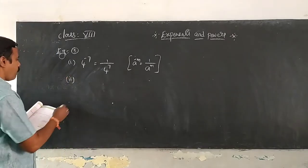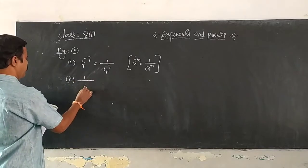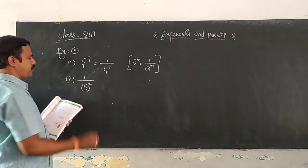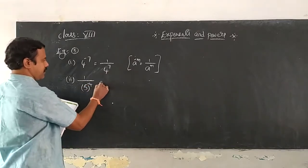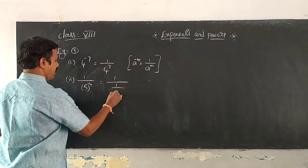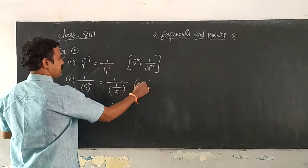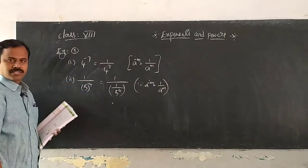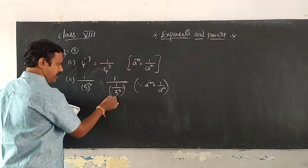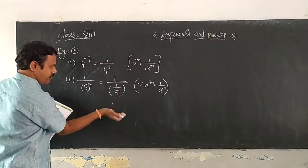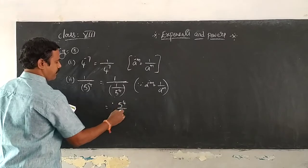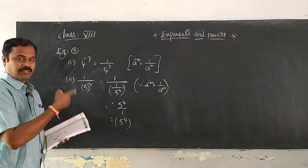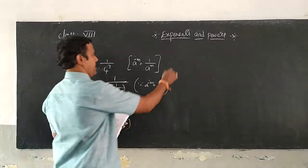Coming to the second question: 1 by 5 to the power of minus 4. Using the same formula, a power minus m equals 1 by a power m, we get 1 by (1 by 5 power 4). Since there is a fraction in the denominator, it gets reversed. So it becomes 5 power 4 by 1, which is nothing but 5 power 4. No need to find the value of 5 power 4.